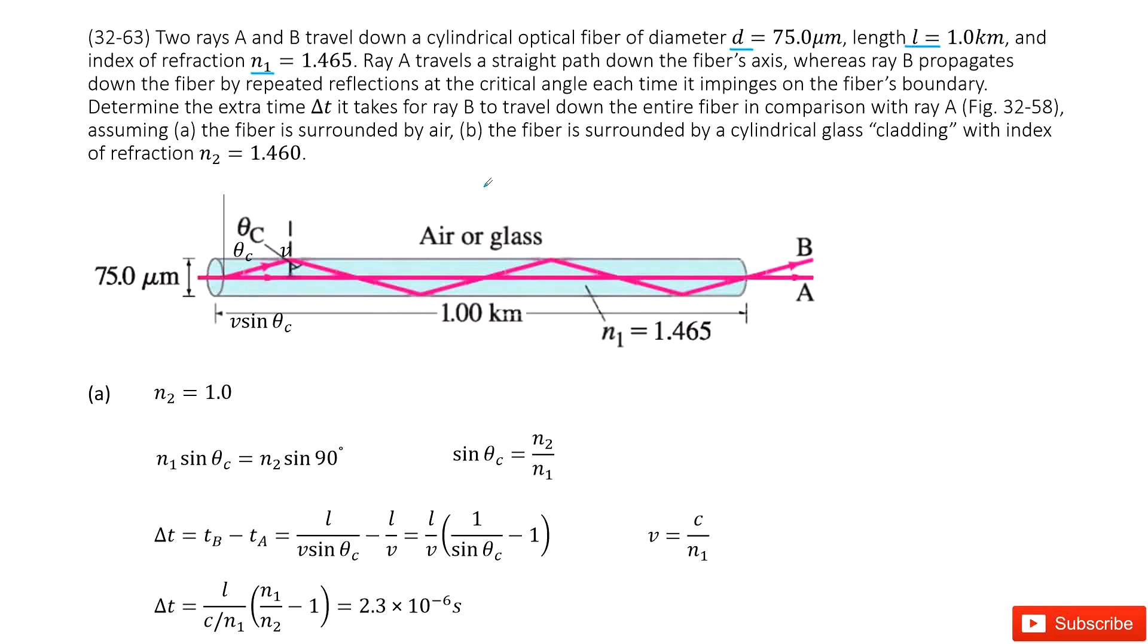Welcome to my channel. I'm Zhang Zingxu. Let's look at problem 63 in Chapter 32. Chapter 32 is about light reflection. We have two rays A and B traveling down a fiber. The fiber's diameter, length, and index N1 are given.